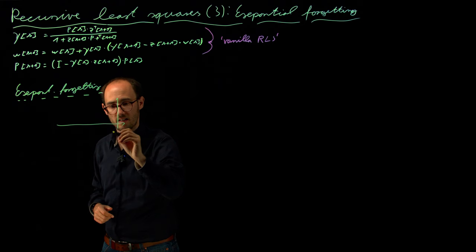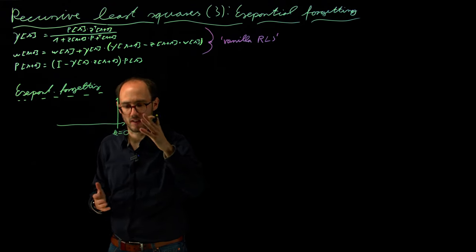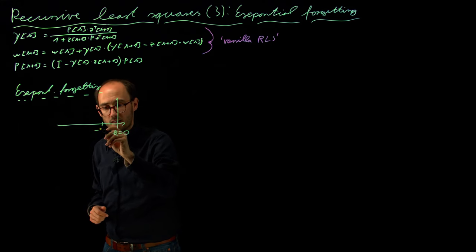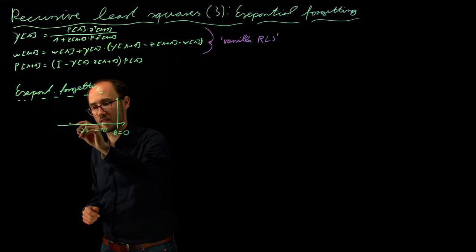So let's consider this is our time step k equals 0, so basically our current time step. And let's say we have here our data points in the past, minus 10, minus 20, minus 30 data points in the past.